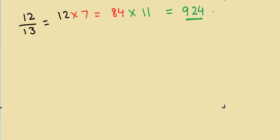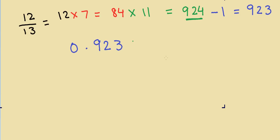From 924 I subtract 1, giving 923. So the answer starts as 0.923. Then I take the 9's complement of 923: 9 plus 0 is 9, so write 0; 2 plus 7 is 9, so write 7; 3 plus 6 is 9, so write 6. The repeating answer is 0.923076923076...